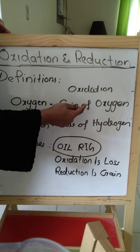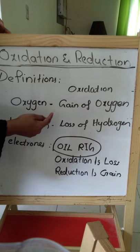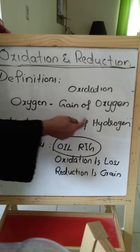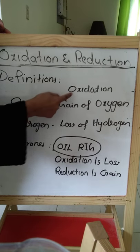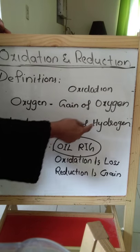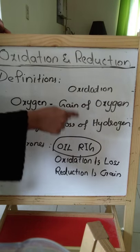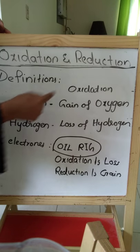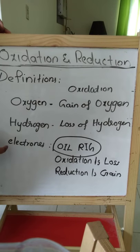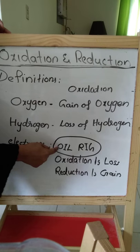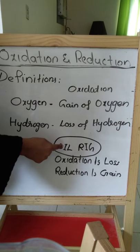When something gains oxygen it has to lose something, and that something is hydrogen. So gain of hydrogen is reduction, and loss of hydrogen is oxidation. That is the second definition, in terms of hydrogen.